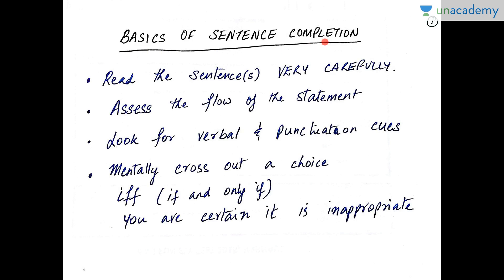The basics of sentence completion are: first, you have to read the sentence or the group of sentences in front of you very carefully. Slowly imbibe every word that you read, assess the flow of the sentence, see how the words go and see the trend of the statement. Look for verbal and punctuation cues which will help you determine what the word to fill in has to be — the genre of the word. Unless you are very certain that a particular choice is totally not appropriate, do not strike it off. If you are very certain that a word just does not fit and doesn't make any sense, then mentally strike off that word and deal with the other choices.